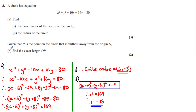For the next part, we're told that given that P is a point on the circle that is furthest away from the origin O, find the exact length of OP, and this one is for two marks. We've just worked out the coordinates of the center and the radius, and we're asked to calculate the exact length of the line segment OP.